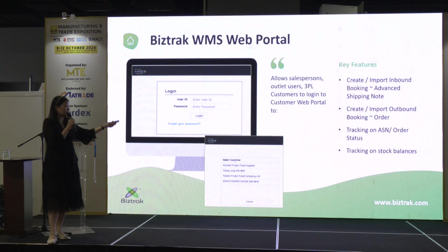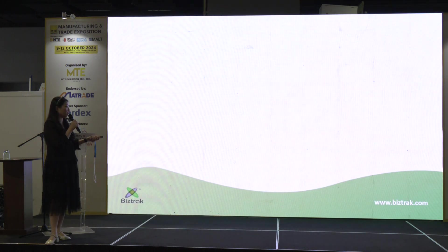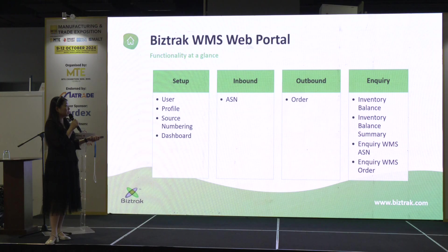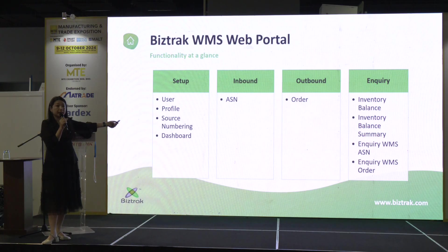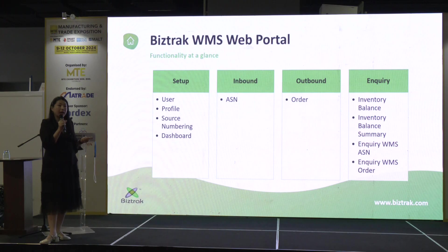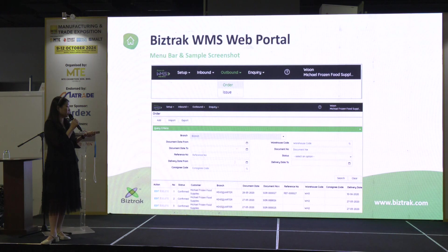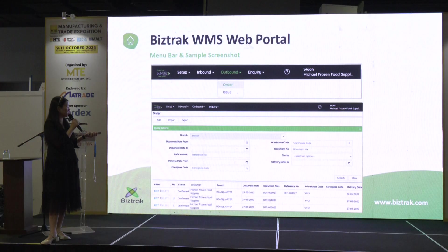This will be the web portal for your own outlet, your salesperson, or if you're 3PL, your client can log in and check their own products — inventory balances — and place orders. If they have an ASN — Advanced Shipping Notice — they have inbound booking, where they want to book your space, meaning they tell you what products are going to come into your warehouse. So you can have this inbound ASN. These are the web application screenshots which you can take a look at.